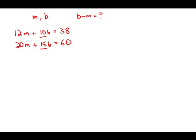So I'm going to exploit that fact. I'm going to multiply this bottom equation times two. And what I wind up with is 40M plus 30B equals 120. Every single term gets multiplied by two.